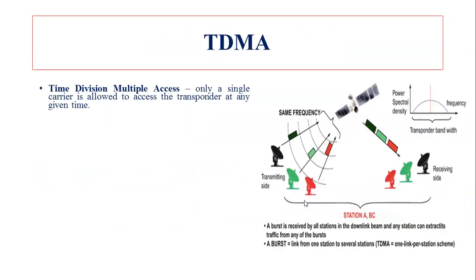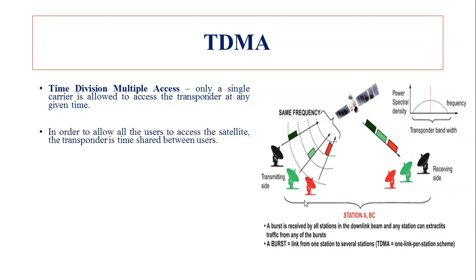Now let us see TDMA — Time Division Multiple Access. In TDMA, only a single carrier is allowed — only one carrier is used, meaning only one user at a time. Only a single carrier is allowed to access the transponder at any given time. For example, if there are 10 slots, in the first slot only one user is assigned, in the second slot the second user is assigned, and each user is only allowed to use that particular carrier in their assigned slot. Slots are allocated separately in order to allow all users to access the satellite.